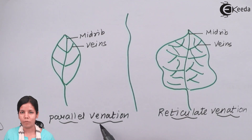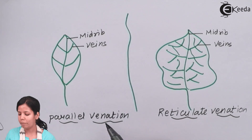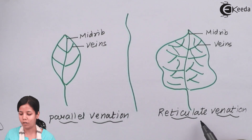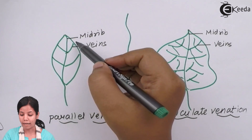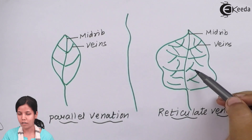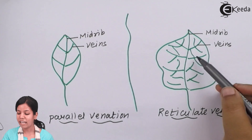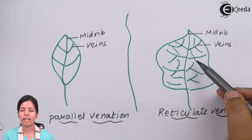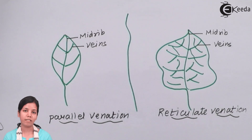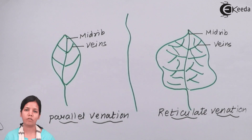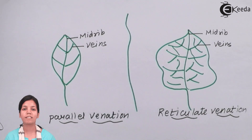In this diagram, we can notice the two different types of venation: parallel venation and reticulate venation. In parallel venation, the veins run parallel to each other, whereas in reticulate venation, the veins are irregular and they form a mesh-like network. Students, in this part of the chapter we have studied what venation is and what the two different types of venation are — parallel venation and reticulate venation. I hope you all are clear about this concept.